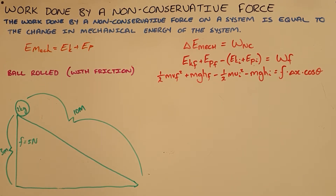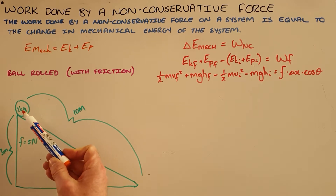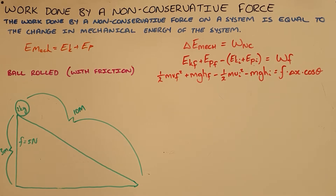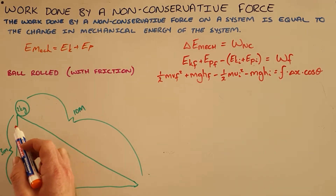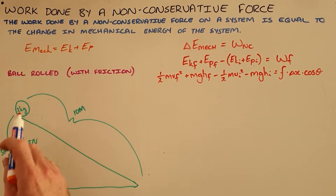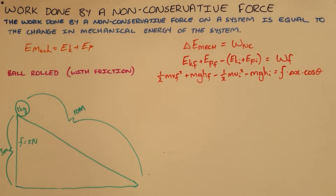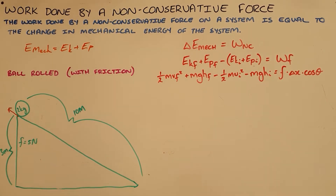We can demonstrate this with a common example of an object rolling down a slope. Here we have a 2 kg ball released from rest at the top of a 3 m high incline that is 10 m long, with a frictional force of 5 newtons acting on it. Since gravity is a conservative force and friction is a non-conservative force, only the non-conservative force will have an effect on the mechanical energy of this object.